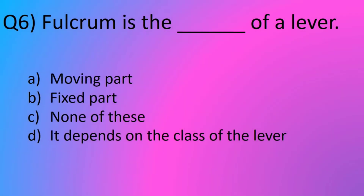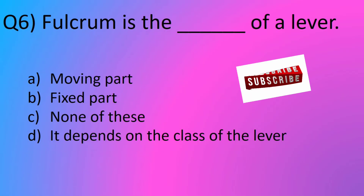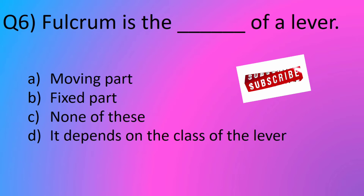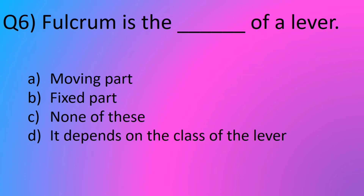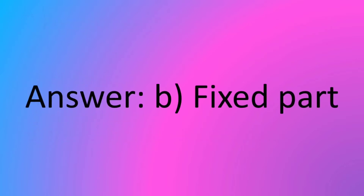Question number 6. Fulcrum is the blank of a lever. Option A, moving part. Option B, fixed part. Option C, none of these. Option D, it depends upon the class of the lever. The answer is option B, fixed part.